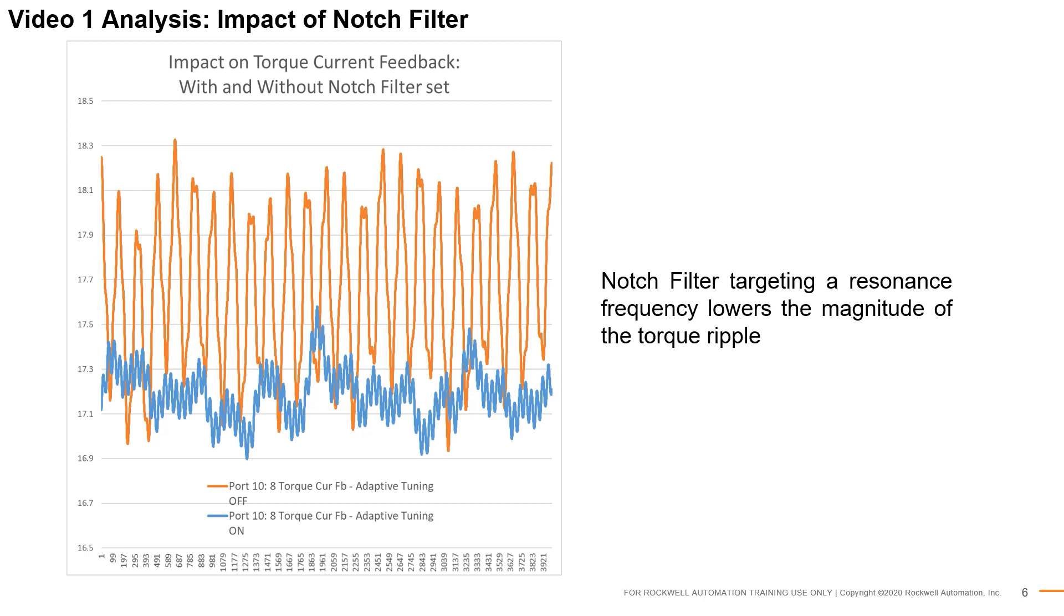We can observe that when adaptive tuning sets a notch filter at the injection frequency, the magnitude of the ripple on the torque current feedback is reduced. This reduction is observable in the blue trace. This concludes the notch filter setting demonstration.